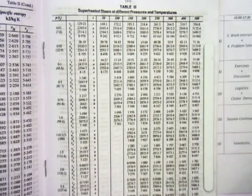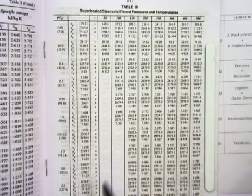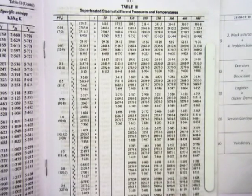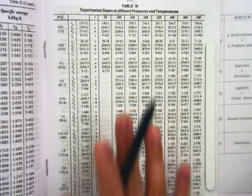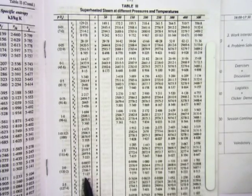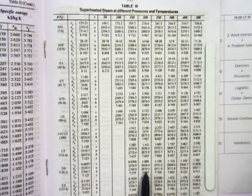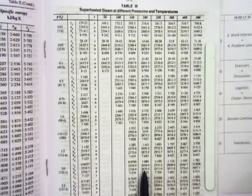This column shows the dry saturated vapour properties at that pressure and can be used for interpolation. For example, at 2 bar, properties are listed at 150 and 200 degrees C. For 180 degrees C, interpolate between those two values. For 130 degrees C, which is superheated vapour at 2 bar, interpolate between the dry saturated vapour value at 120.2 degrees C and the 150 degrees C tabulated value.